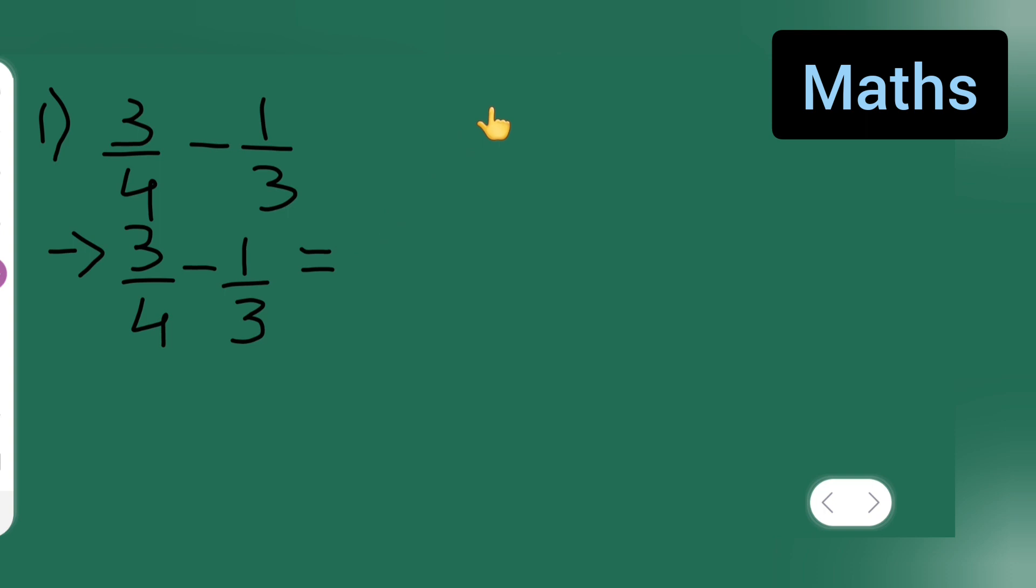What you need to do is cross multiply. First take 3 upon 4, multiply it with 3 here, down also multiply it with 3, minus 1 upon 3, multiply it with 4, here also multiply it with 4. So basically what you'll have done is 3 upon 4, you'll have kept it as it is, multiply it with the denominator of the other, then plug minus sign, take 1 upon 3, multiply it with denominator of this.